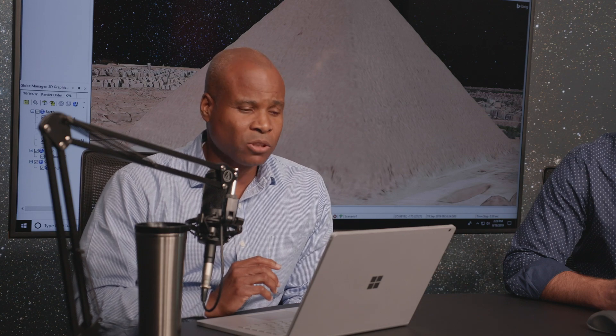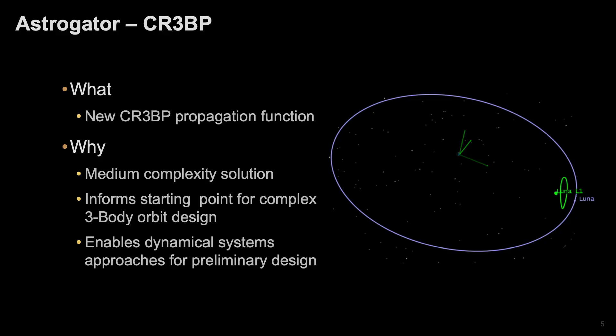This is essentially a tool for planning trajectories when you have multiple large bodies that are exerting a gravitational force on a spacecraft that is either traversing between the two or stationed at a libration point between the two large bodies.